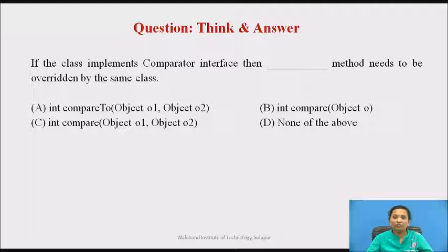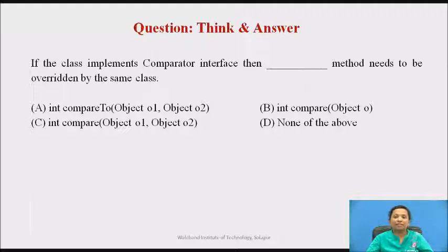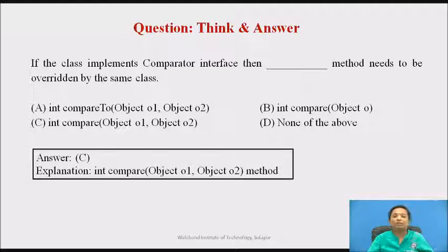You can pause the video for some time and answer the following question: if a class implements the Comparator interface, which method needs to be overridden by that class? Option A: compareTo method with two parameters. Option B: compare method with one parameter. Option C: compare method with two parameters. Option D: none of the above. The correct answer is C — the int compare method with two parameters, object1 and object2, needs to be overridden by the class implementing Comparator interface.